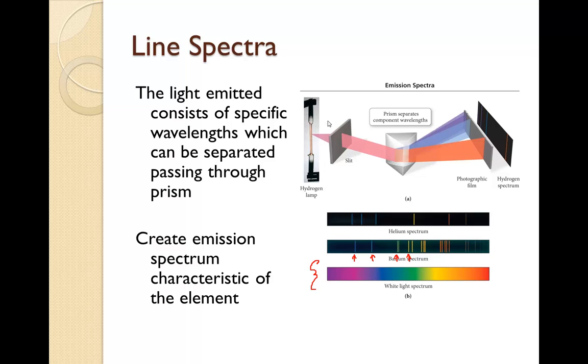The light emitted consists of specific wavelengths which can be separated if you pass it through the prism. So here's the prism and it passes and it separates out those wavelengths. If it was a rainbow and not just a specific element, all these colors would be filled up like it is down here. However, since it's a specific element, it breaks it up into very specific wavelengths. This creates an emission spectrum characteristic of the element.